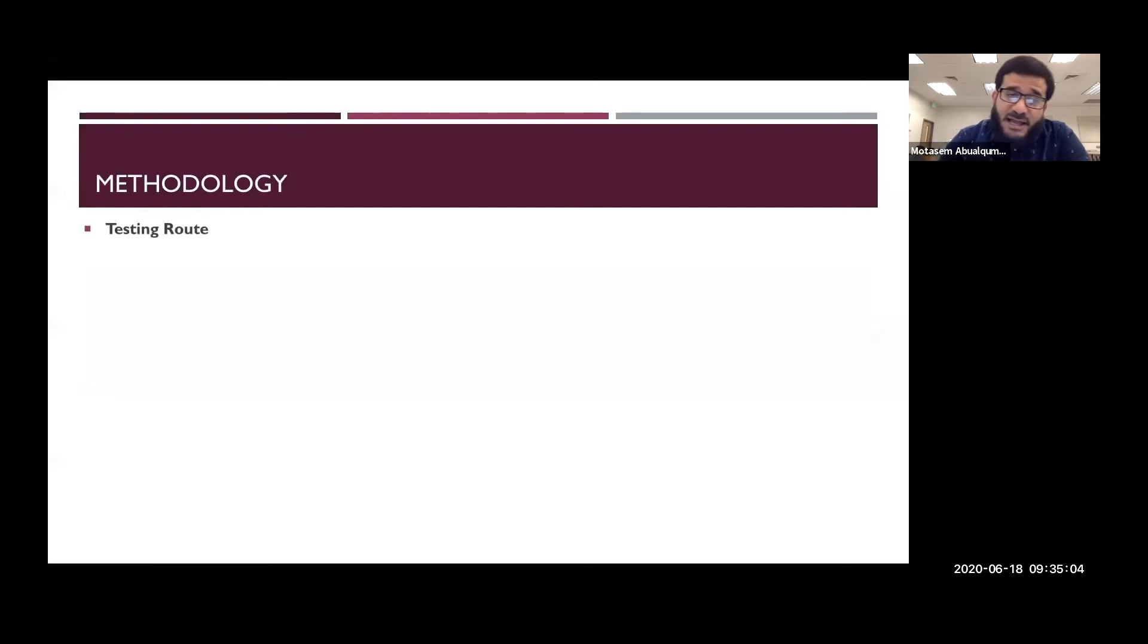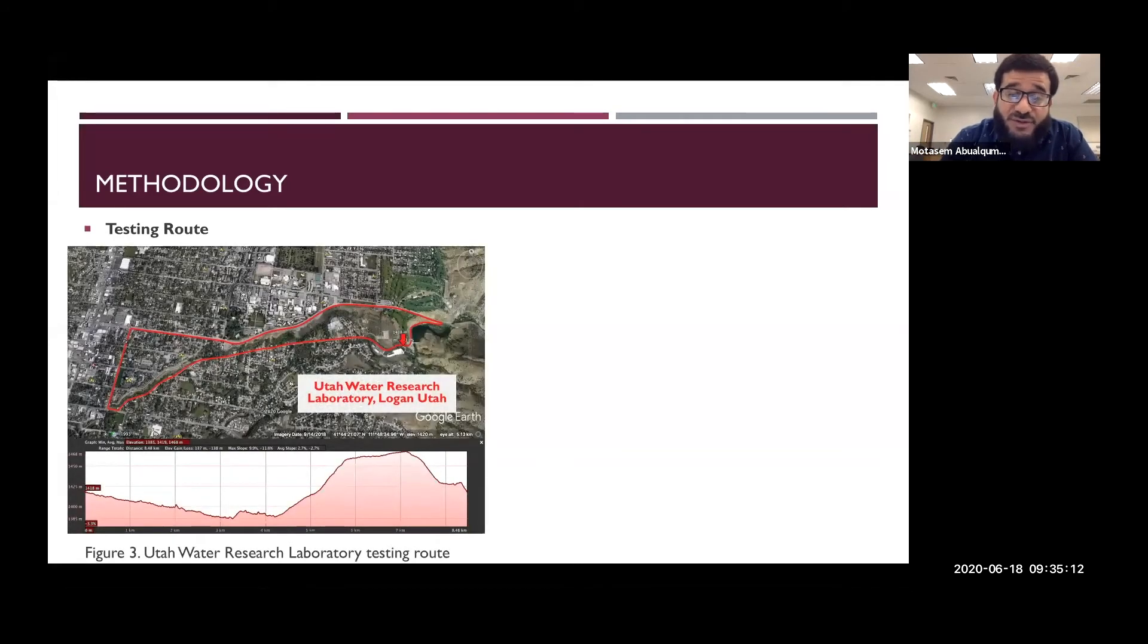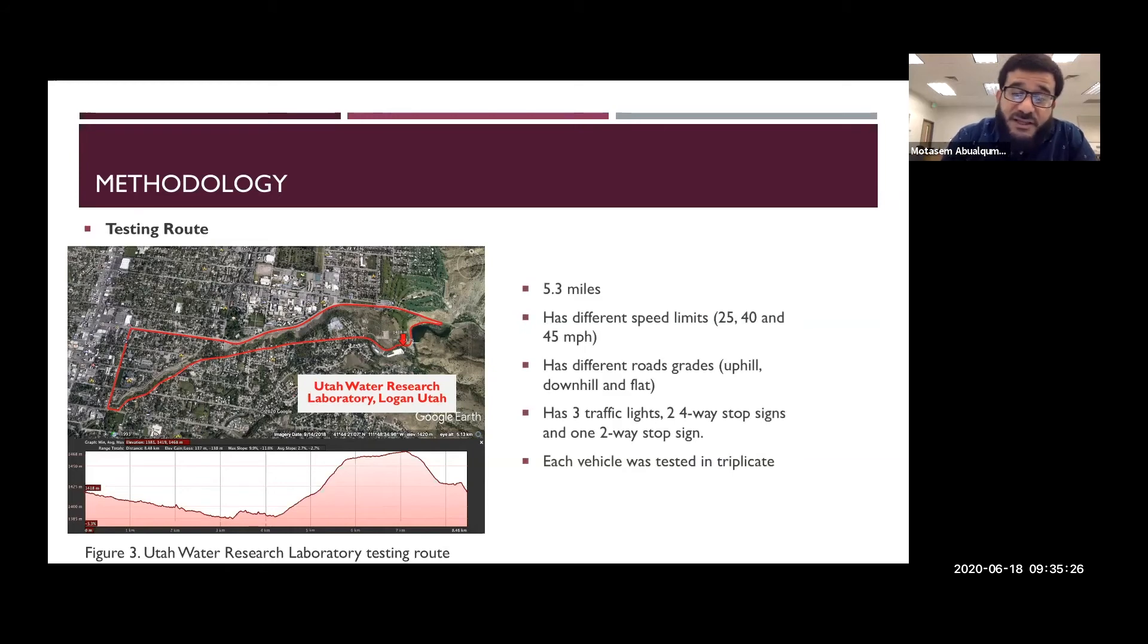The methodology—we have to drive the vehicles on a route. We have a testing route and we call it the Utah Water Research Laboratory route, which is located near the Utah Water Research Laboratory in Logan, Utah. This is the map of the route and this is the profile. We chose this route because it's long, 5.3 miles. It has different speed limits. There are sections with speed limits of 25, 40, and 45 miles per hour. The route has different road grades, so we have uphill sections, downhill sections, and flat sections. There are three traffic lights and there is a school zone. There are three stop signs on the road. Each vehicle was tested in triplicate on this route. We tried to have some representation of the real world with all these parameters included in the route.